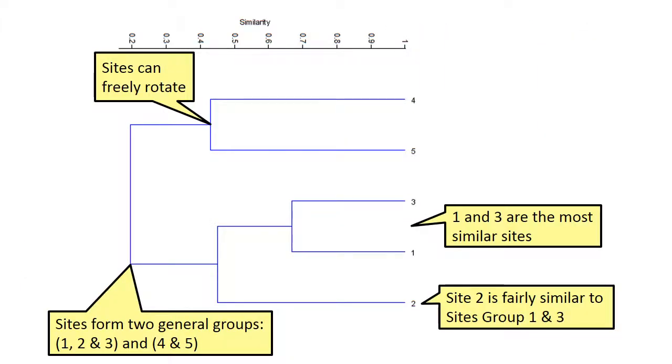There are several things to note regarding the interpretation of dendrograms. The site connections, such as 4 and 5, can rotate. Here, site 4 is placed above site 5. However, the opposite arrangement, with site 5 above site 4, is equivalent.